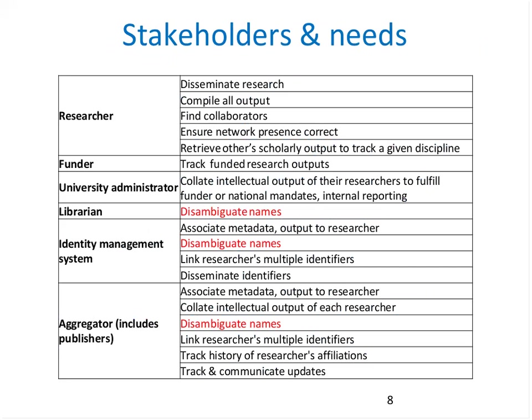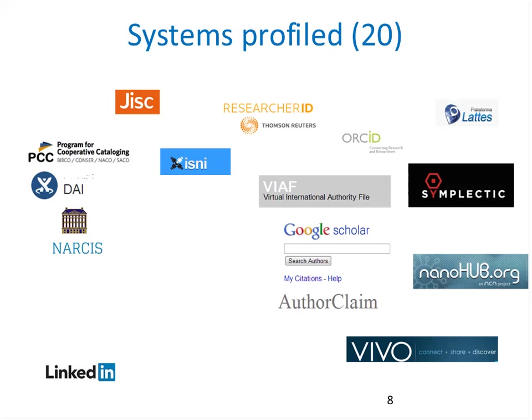The first thing the task group did was write up 18 use case scenarios from the perspective of six different actors or stakeholders: researcher, funder, university administrator, librarian, identity management system, and an aggregator including publishers. I have consolidated the needs identified here. Some overlap — for example, the need to disambiguate names is common to several stakeholders.